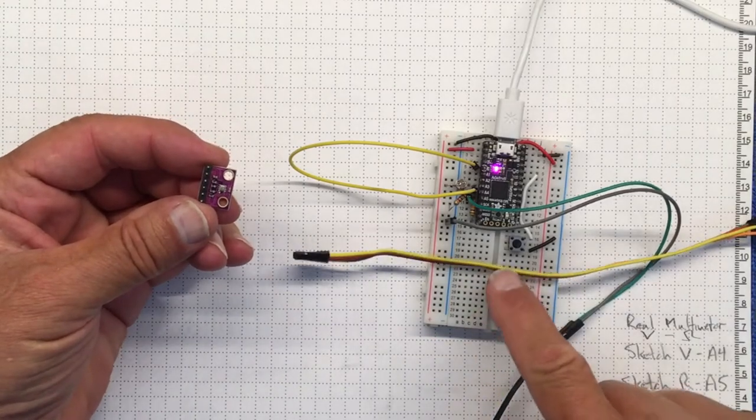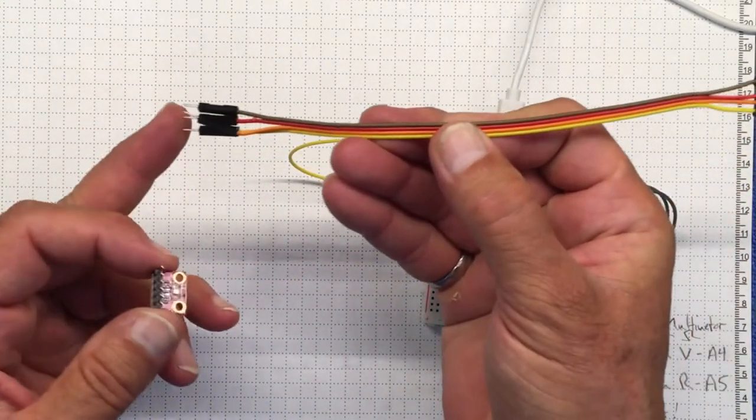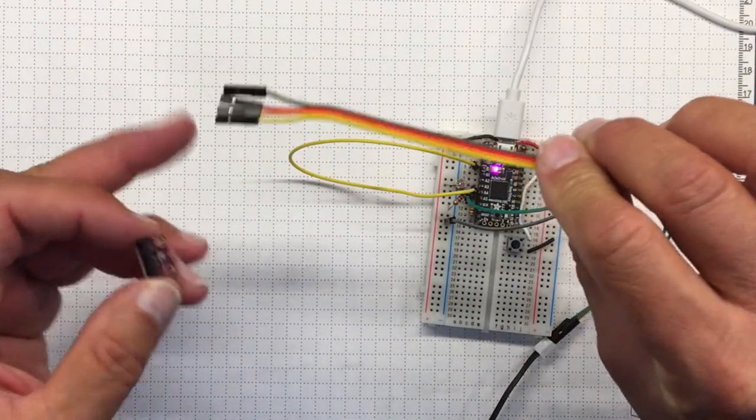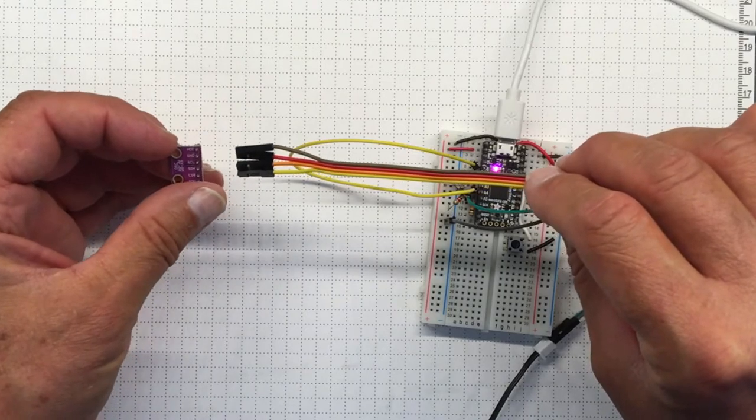Take your pressure transducer out of your breadboard and use this extension, male on one end, female on the other, to make connections for power, ground, SDA, and SCL.